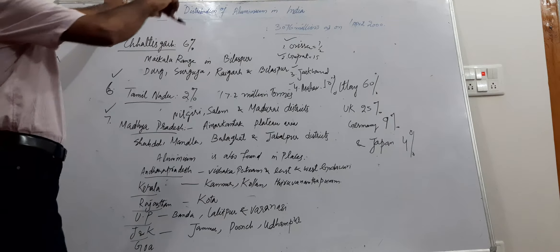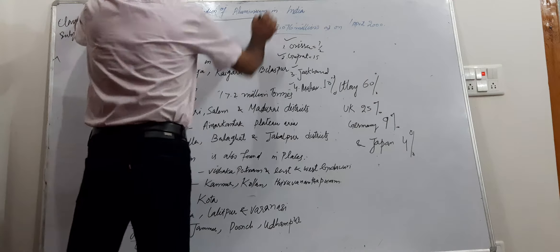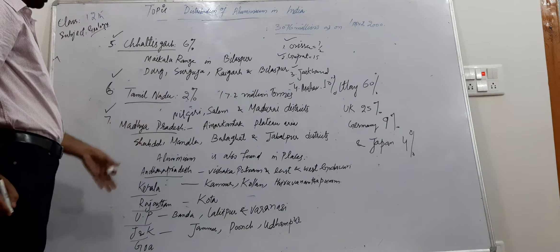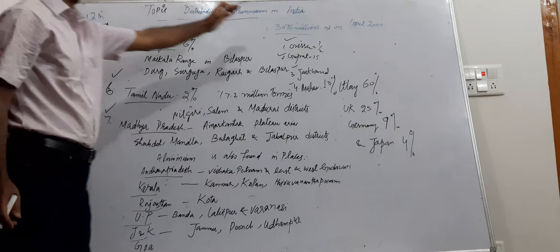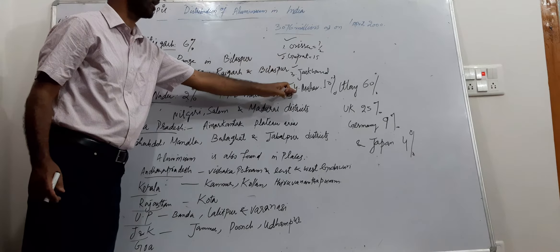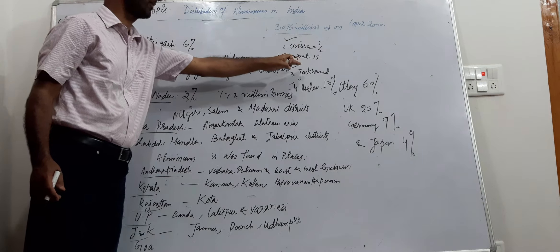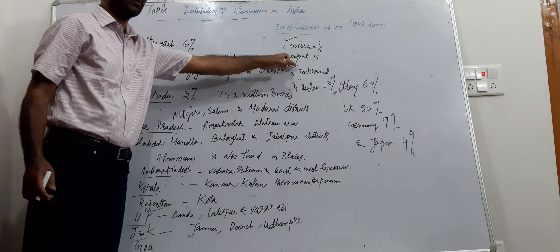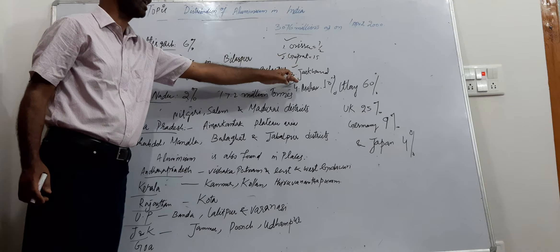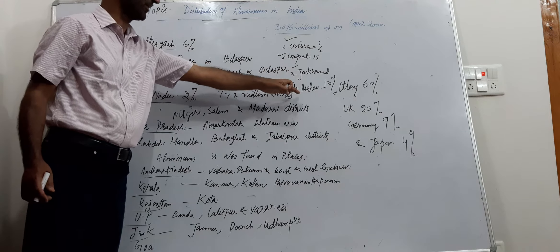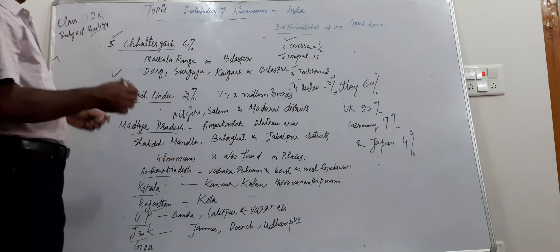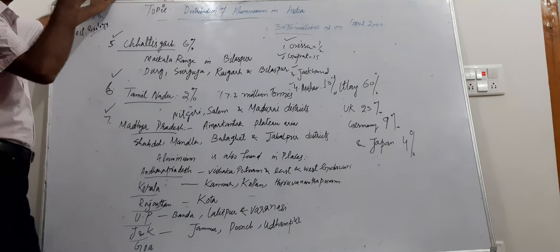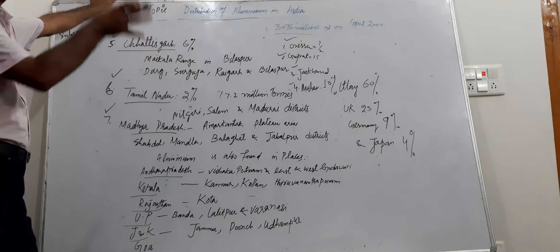The distribution is in these states. We discussed in the previous class four states: Odisha half production, Gujarat 15 percent production, Jharkhand 12 to 13 or up to 14 percent, Maharashtra 10 percent. So these four states and their contribution which were in sequence were discussed in the previous class.